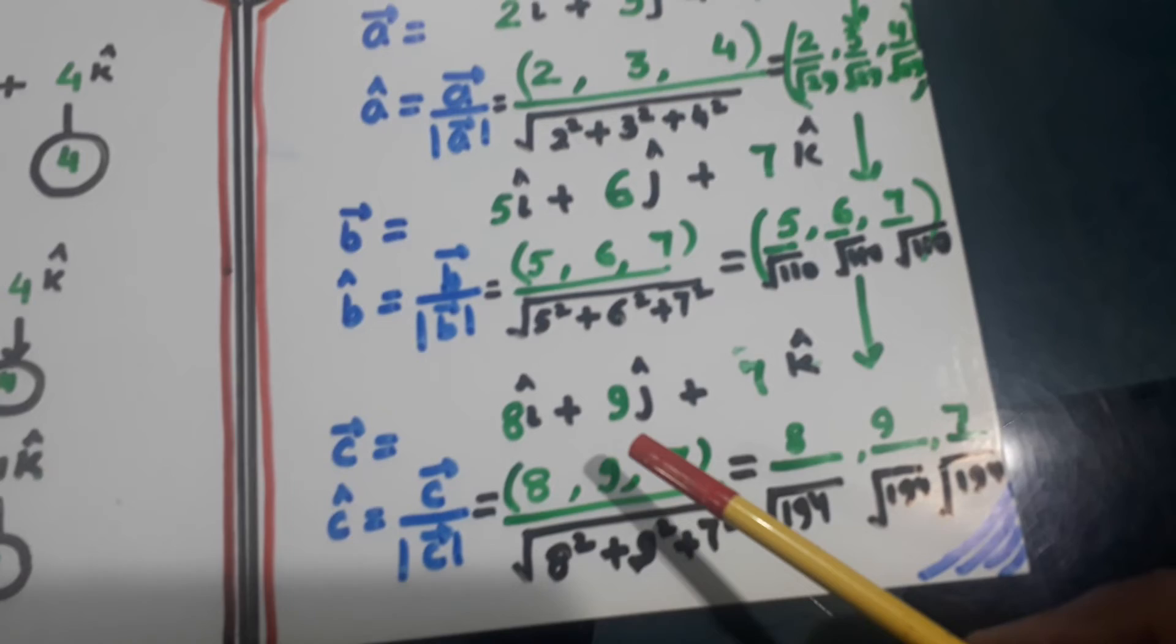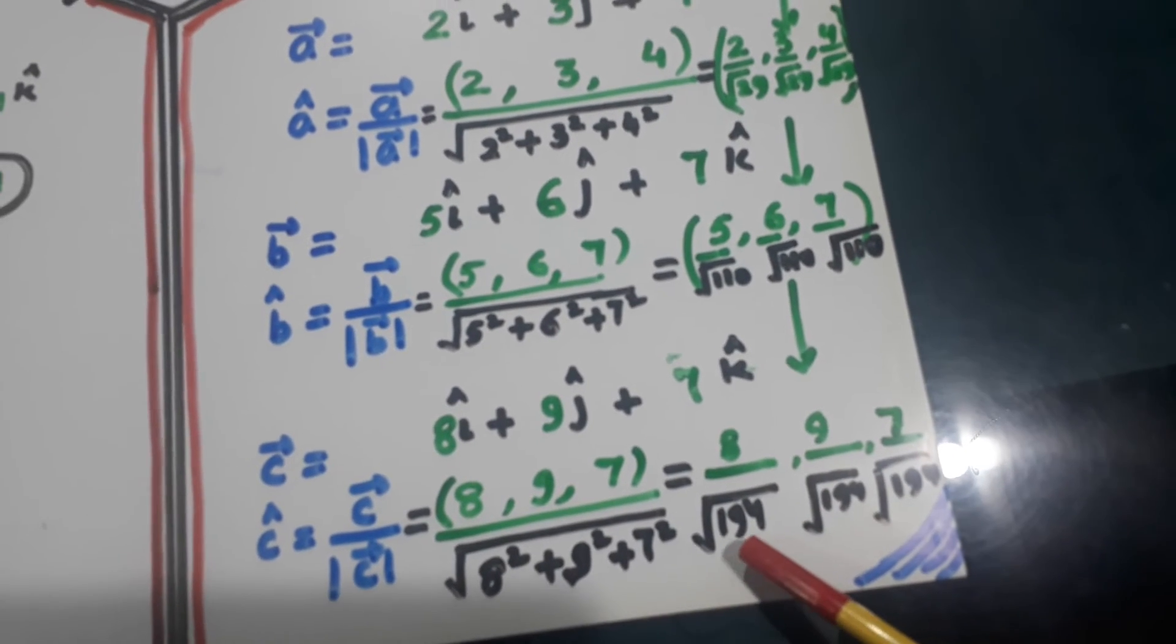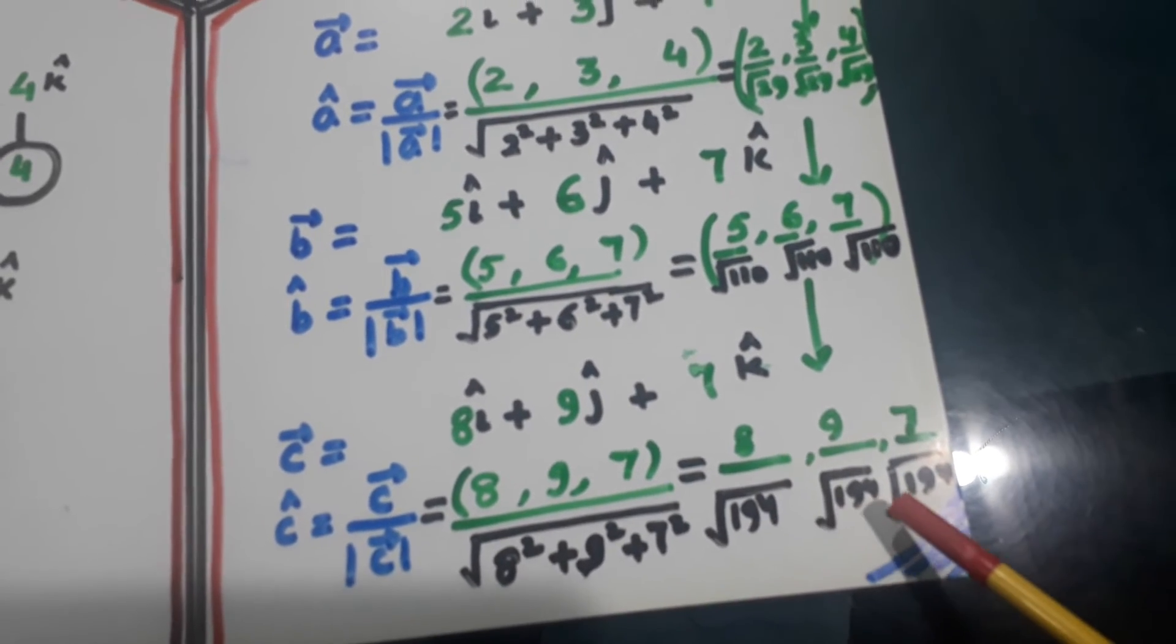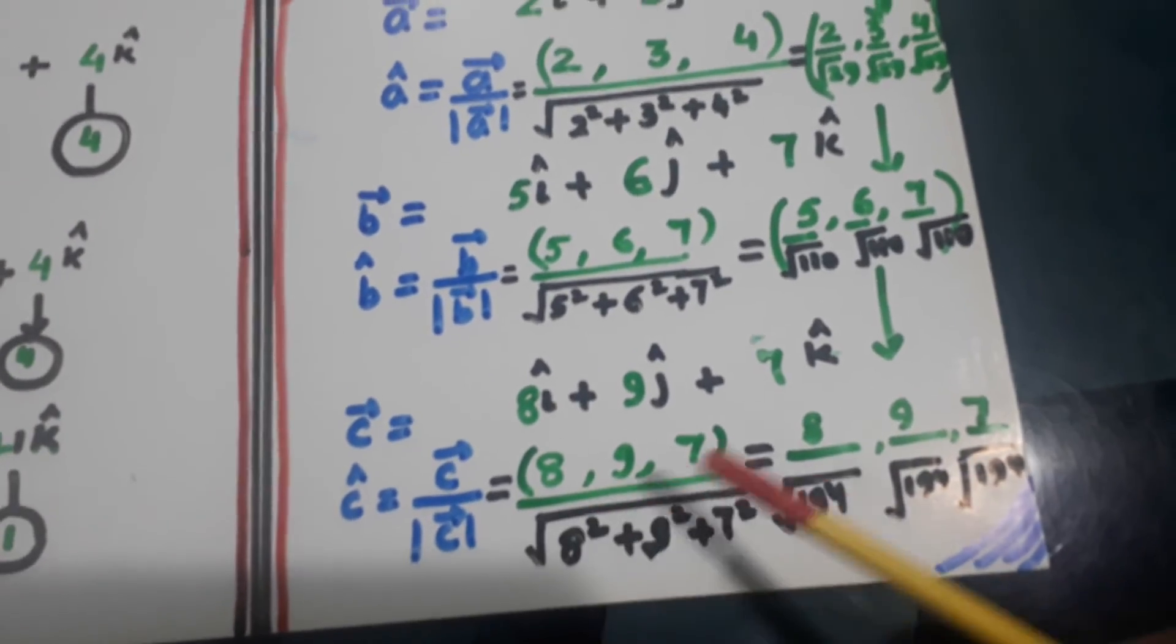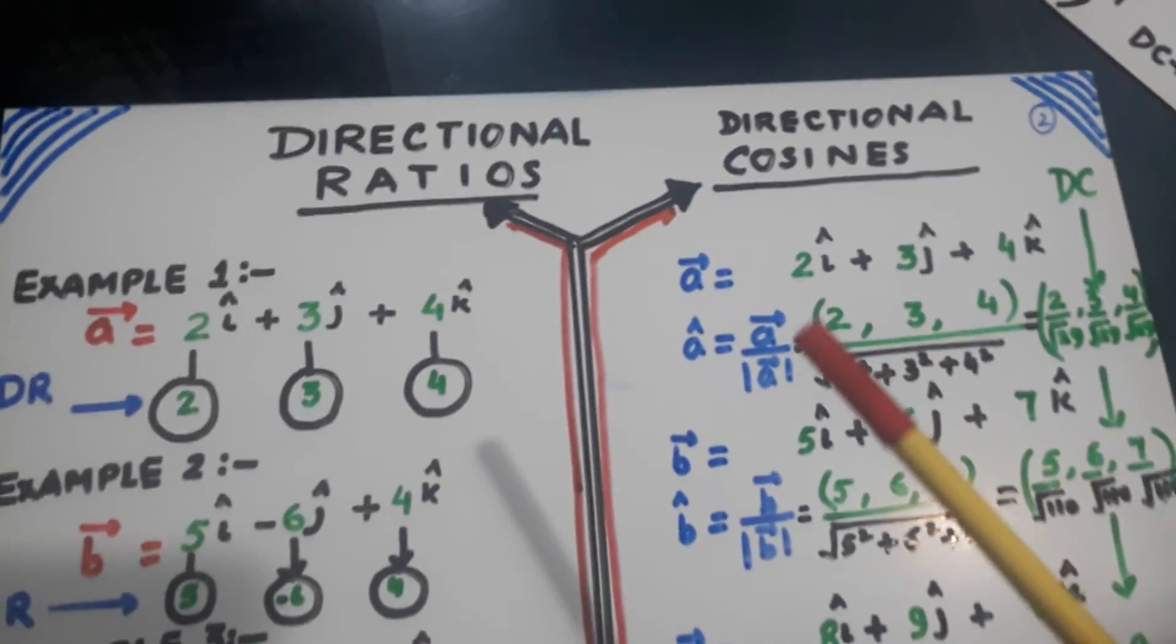Similarly, 8, 9, 7, divided by root 194. They also become the DCs. So this is how we calculate the doctors and the DCs. That is directional ratios and the directional cosine.